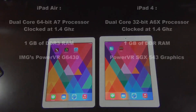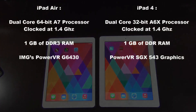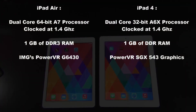To give you a quick summary: the iPad Air has a dual-core 64-bit A7 processor clocked at 1.4 GHz with 1 GB of DDR3 RAM. The iPad 4 has a dual-core 32-bit A6X processor clocked at 1.4 GHz as well with 1 GB of DDR RAM.